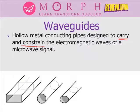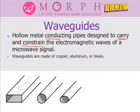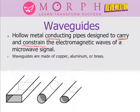It's like a tube, and it comes in different shapes: rectangular, circular, and elliptical waveguides. All of these are made of conductors such as copper, aluminum, or brass — these are the metals used to manufacture waveguides.